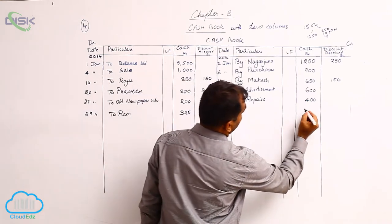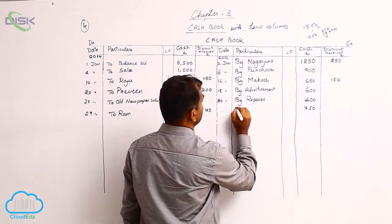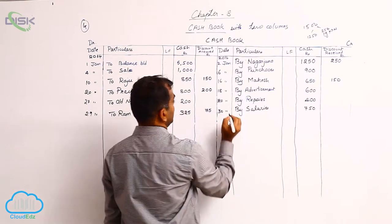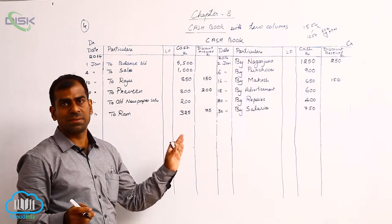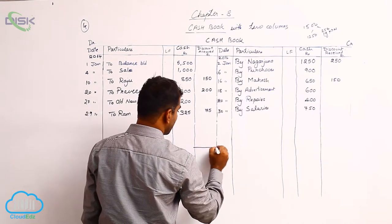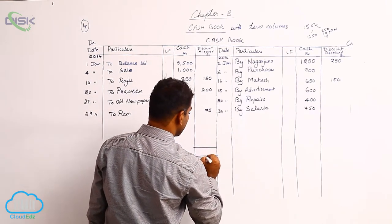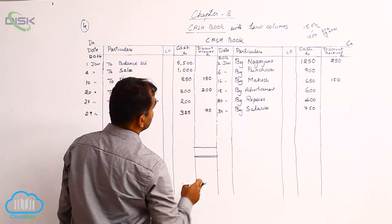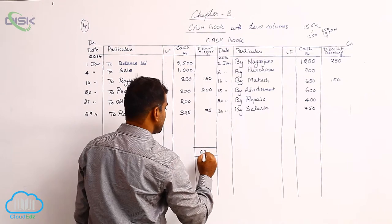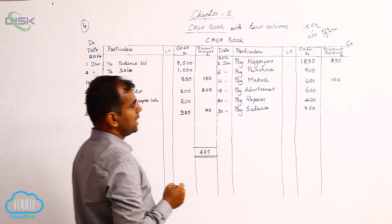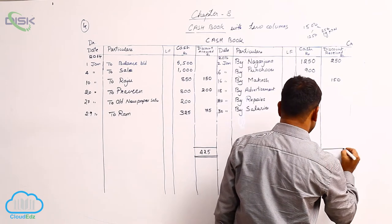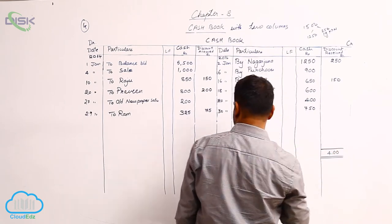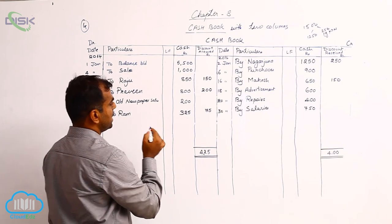The last transaction on 30th January is paid salaries 750 — cash is going out, so record 750 on the payment side with the reason 'salaries'. That covers all transactions for the month. To close the discount columns, you simply total them without balancing. Discount allowed totals to 425, and discount received totals to 400. Now let us see the totals on the debit and credit sides.